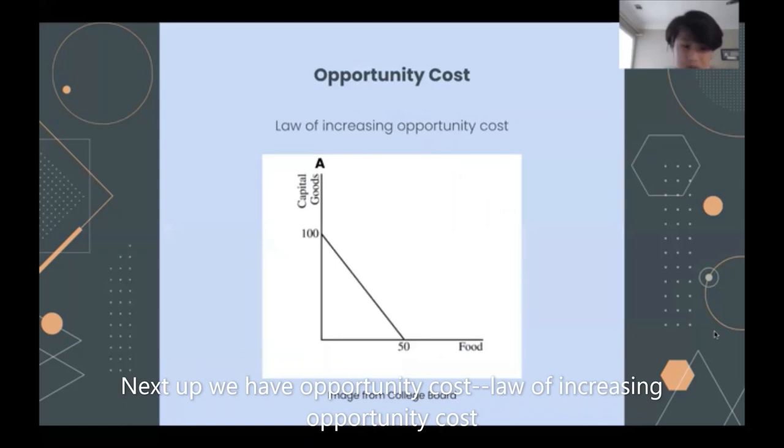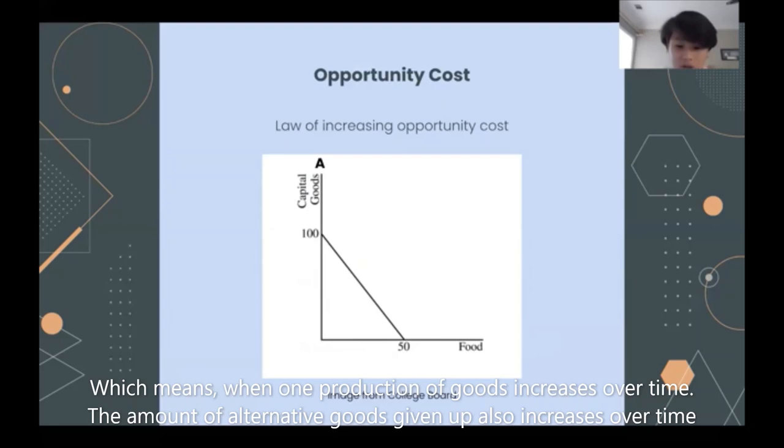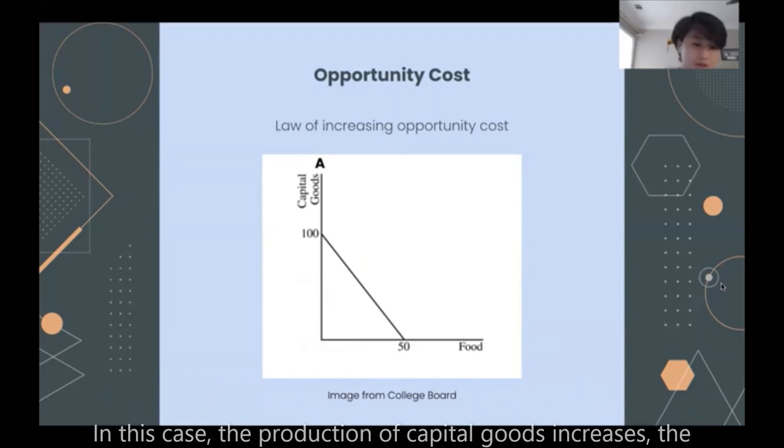Next up, we have the law of increasing opportunity cost. There's also a law called law of increasing opportunity cost, which means when production of one good increases over time, the amount of the alternative good given up also increases. So in this case, the production of capital goods increases, the opportunity cost for food also increases.